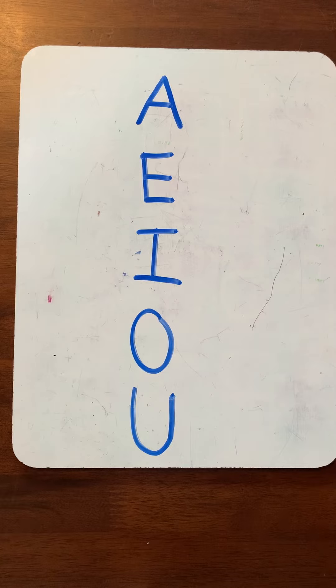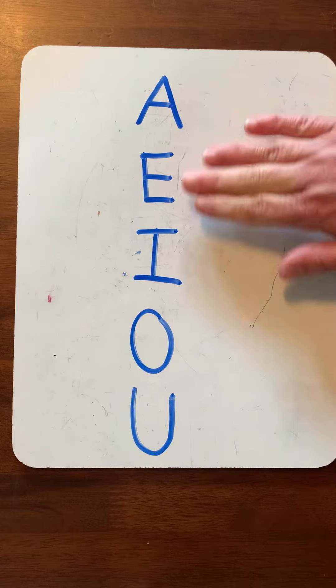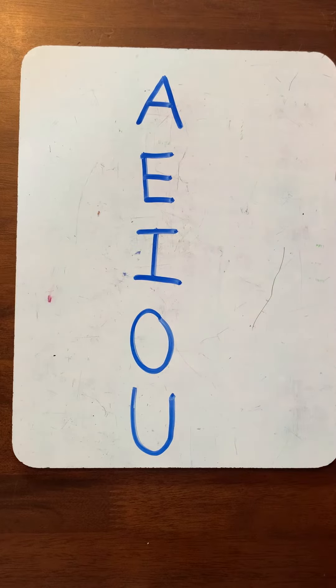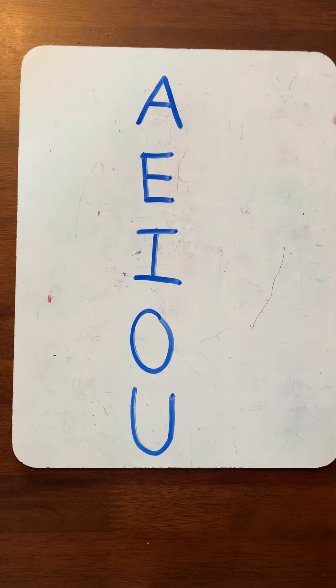And remember, vowels have two different sounds. When they're young, they have cute little baby sounds, and then they grow up and learn to say their names like A, E, I, O, U. But let's talk about their cute baby sounds.